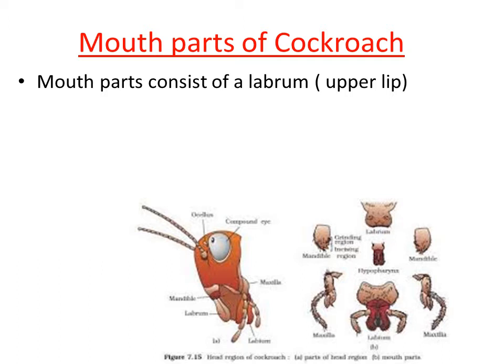The first segment we can see in the mouth part is labrum. Labrum is called as the upper lip of the cockroach. Very next to the labrum we have a paired structure enclosed by the labrum.